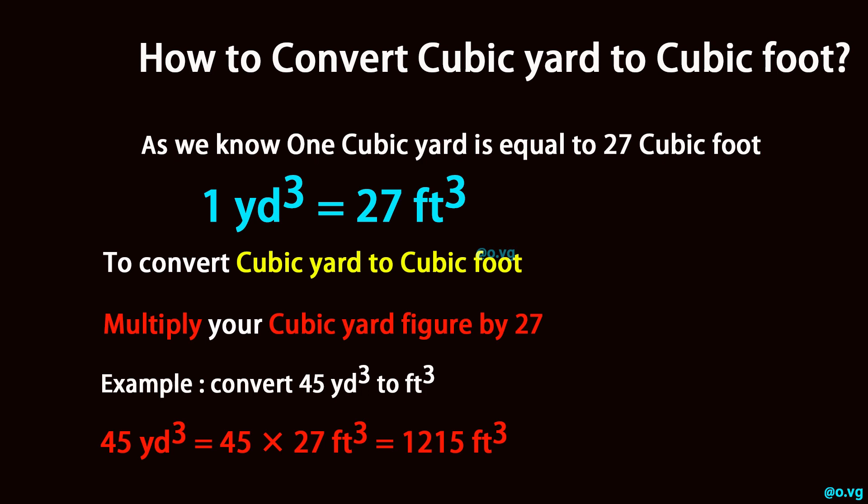Example: convert 45 yd³ to ft³. 45 yd³ is equal to 45 times 27 ft³, which equals 1215 ft³.